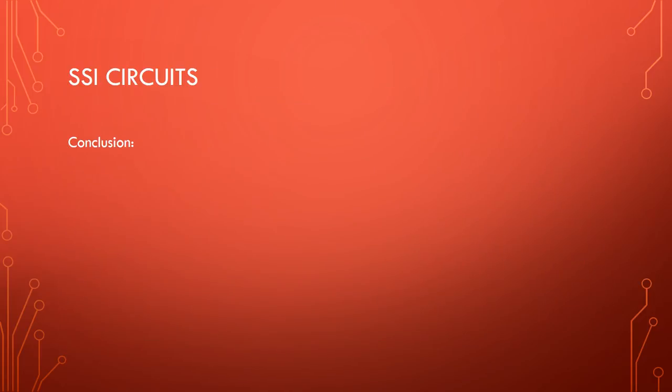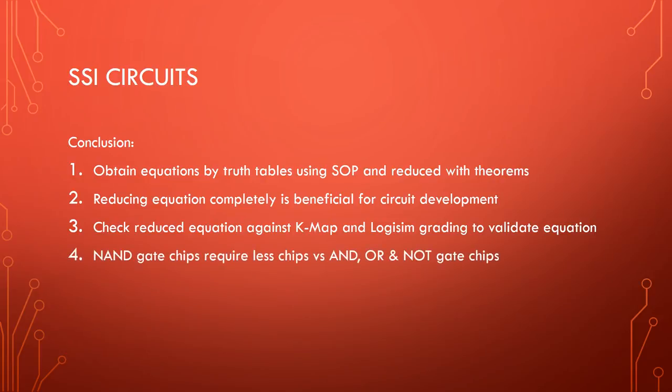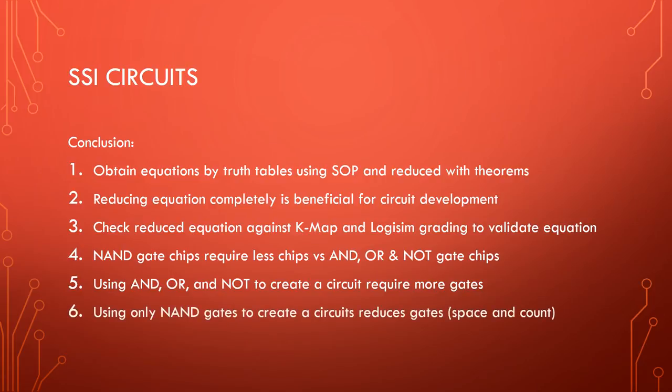In conclusion, we learned that we are able to obtain Boolean equations from truth tables through the use of sum of products and reduce them with laws and theorems of Boolean algebra. It is very beneficial to have a fully reduced Boolean equation before constructing a circuit as it will lead to smaller and cost-effective circuits. We can also validate our reduced equations with K-map and Logisim grading tools. We also learned that NAND gates can result in less chips versus AND OR NOT gate chips. While any circuit can be created with AND or NOT gates, NAND gate only circuits may result in a reduction of required gates as well as space and chip count.